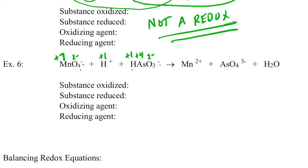That looks good. The manganese ion here is positive two — that tells us it's the manganese two ion, not elemental manganese. For AsO₄³⁻: oxygen is two negative, which would make that arsenic positive five. In water, oxygen is two negative and hydrogen is positive one.